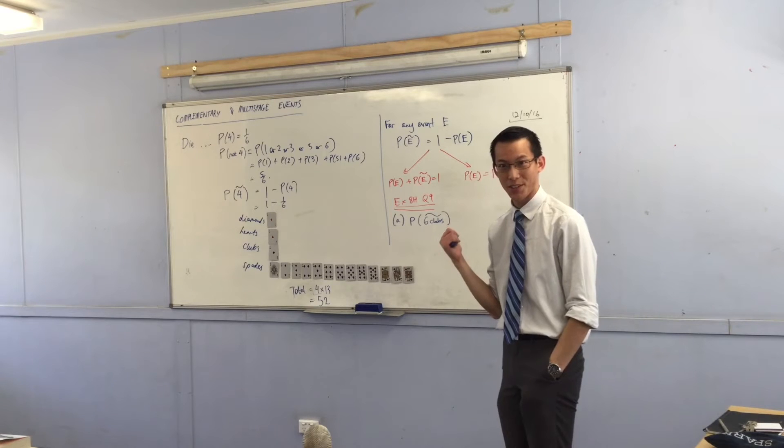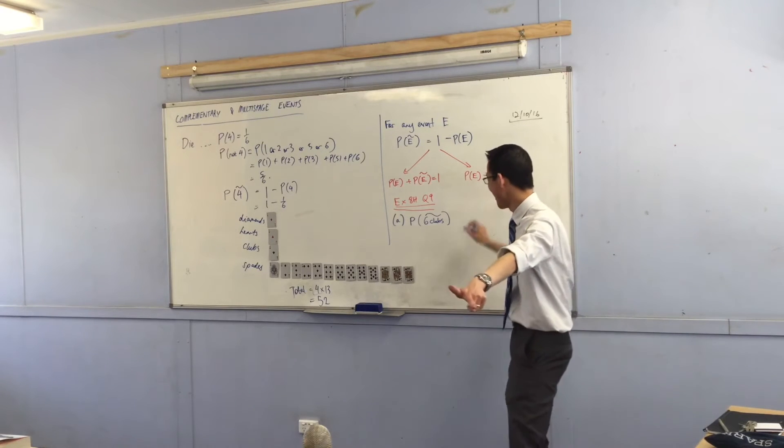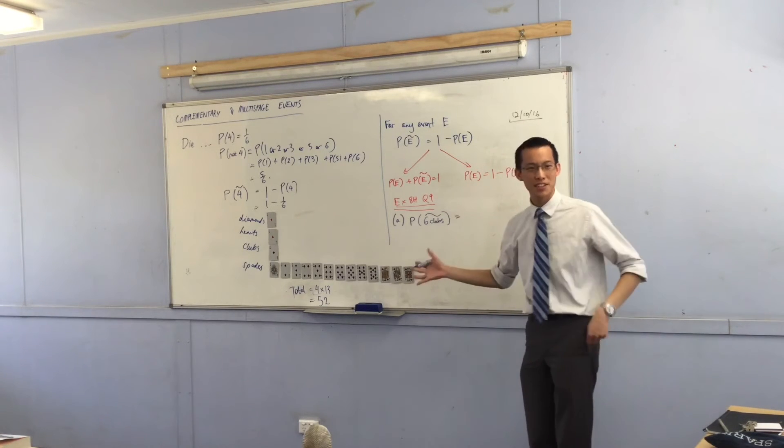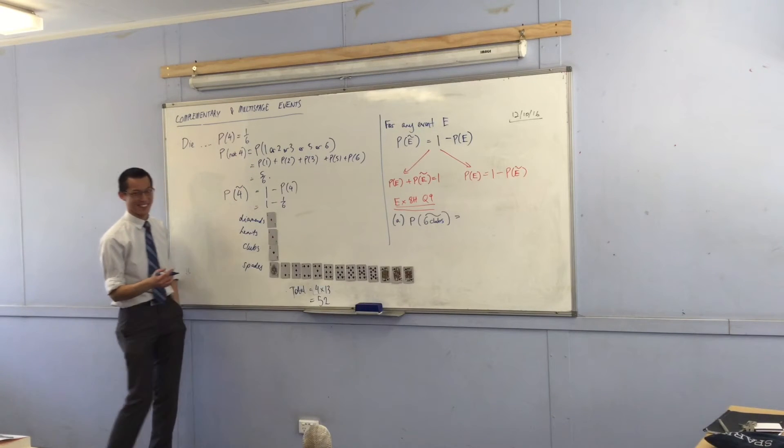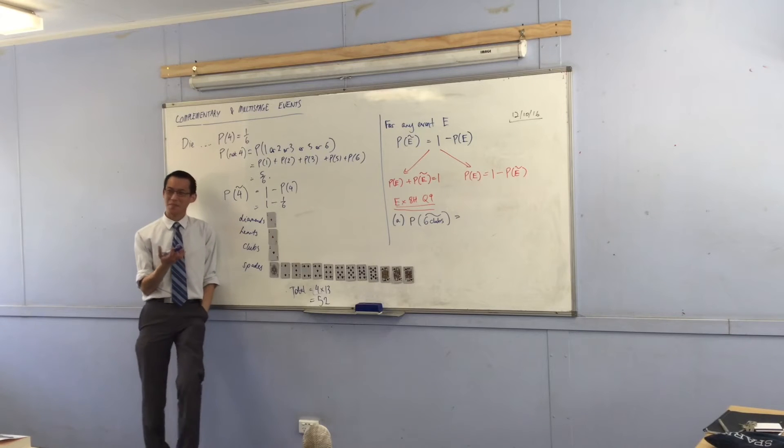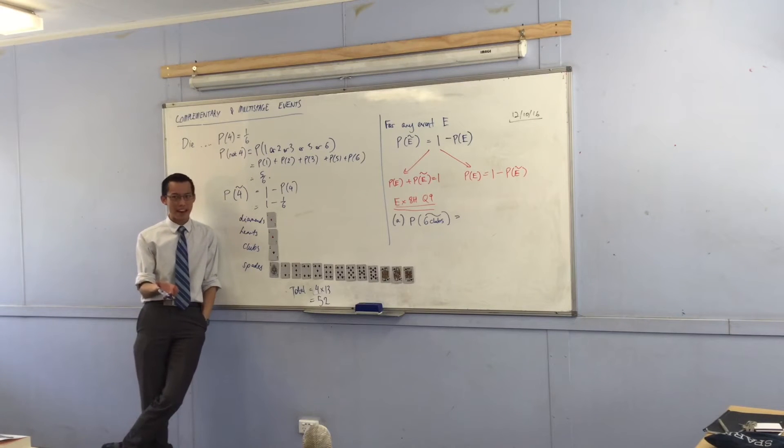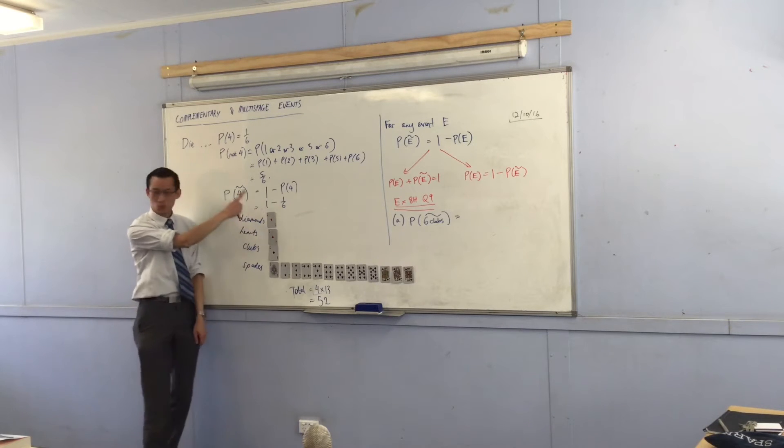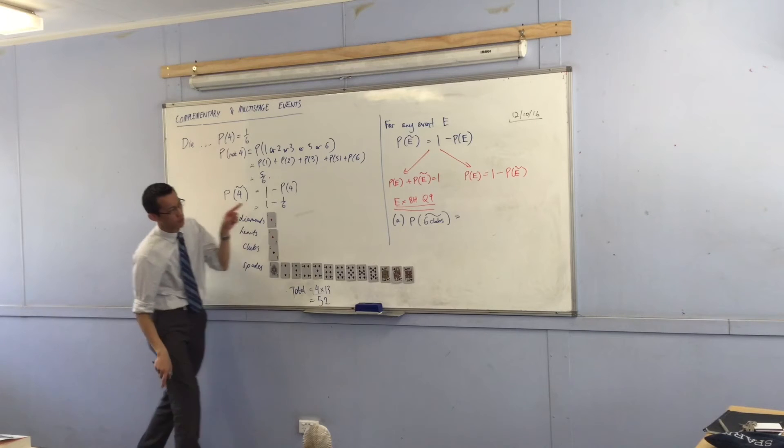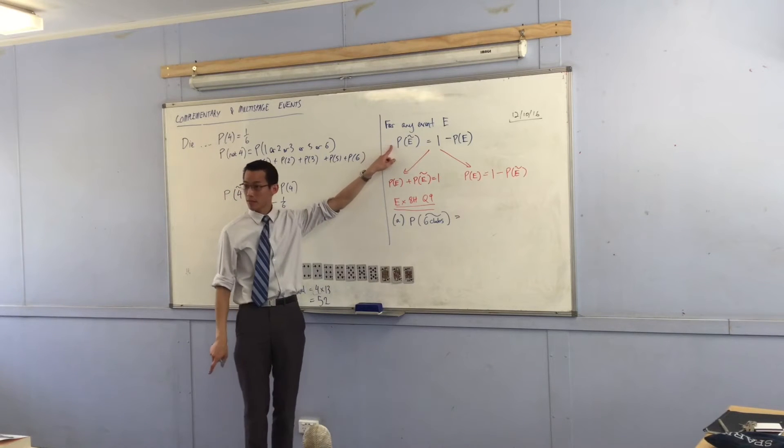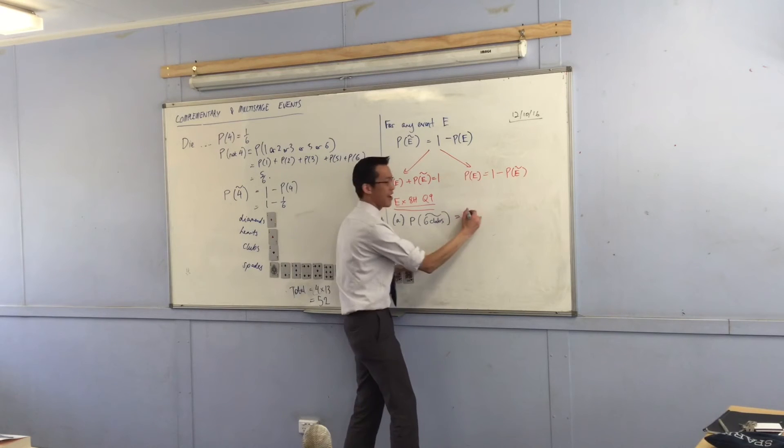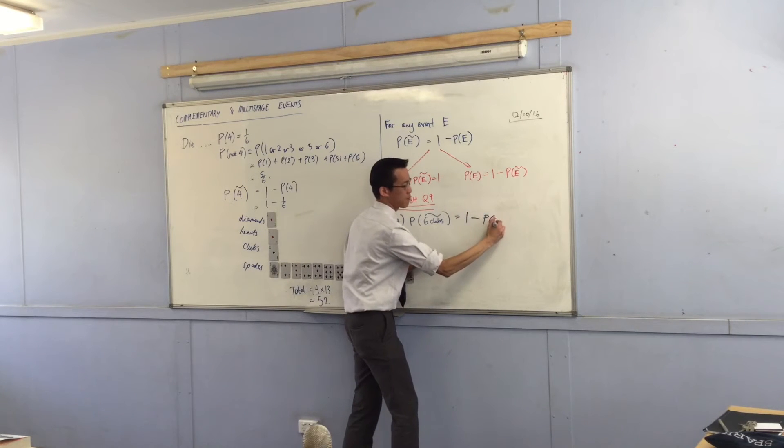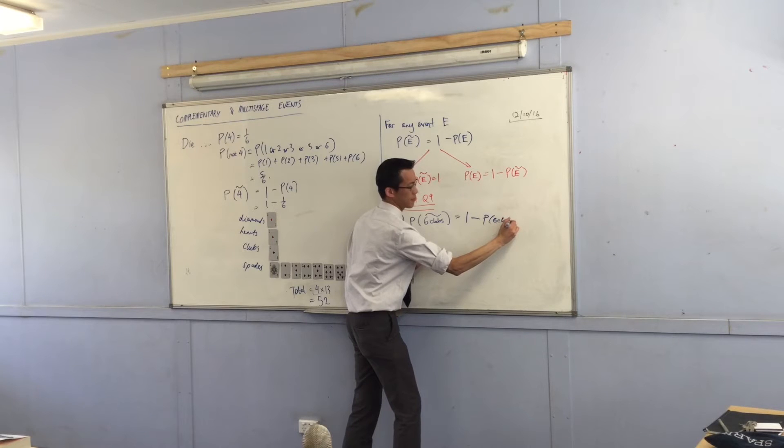I'm going to say the probability of a six of clubs, but I actually want it to be not a six of clubs. So, I'm going to put my complement sign over the top. The first thing I'm going to do is I'm going to notice I could work out how many cards are not the six of clubs, but a much better way is to do this complement thing. So, I'm going to use this line, and I'm going to say the probability of not getting a six of clubs is one take away that probability.